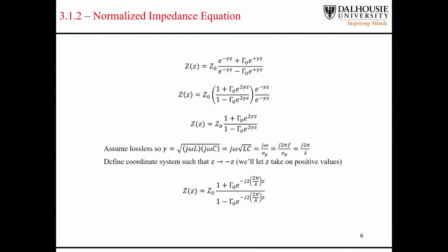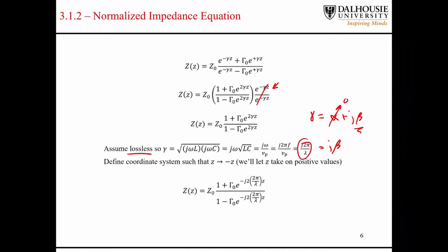Using this equation and doing a little manipulation, we factor out the exponential term and they cancel out. Assuming the lines are lossless, the propagation constant simplifies — the attenuation constant alpha fades away and we end up with beta, where beta equals 2π over lambda.